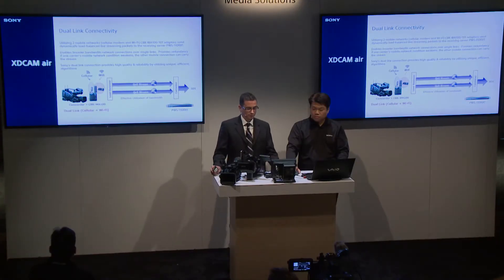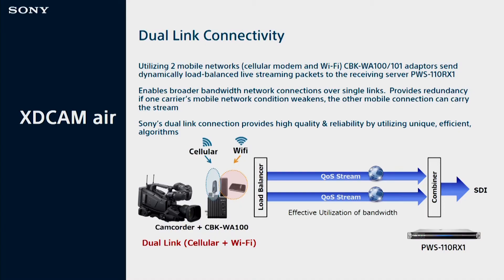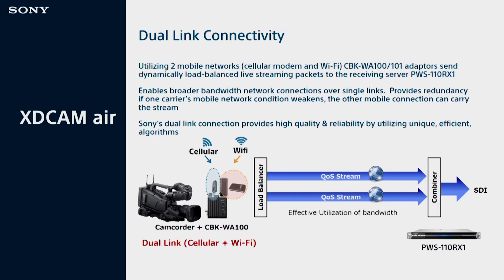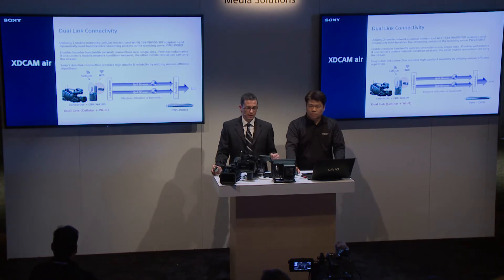We talked about dual-link connectivity being built into some of the newer camcorders and also available via the CBK WA-100. This allows you to stream your video over two connections — that could be two cellular connections, or a cellular connection plus a Wi-Fi connection. The data is aggregated equally among both. As one connection becomes less secure or compromised, the signal will balance higher on the second stream, aggregating and balancing the data. This means you can connect to multiple carriers simultaneously — for example, using Verizon and AT&T at the same time.